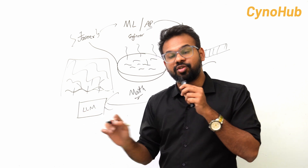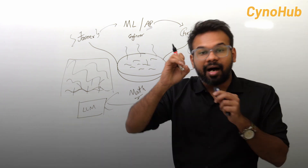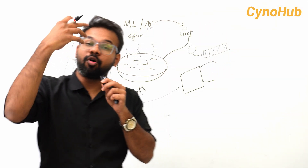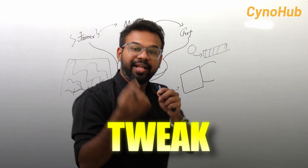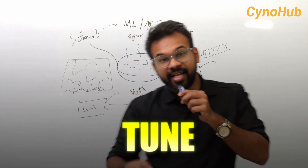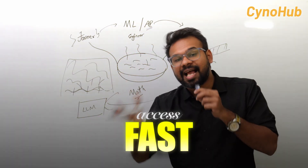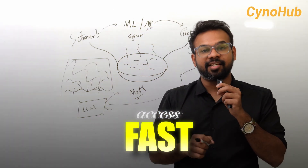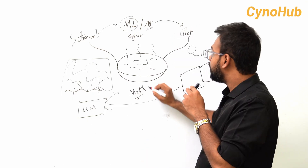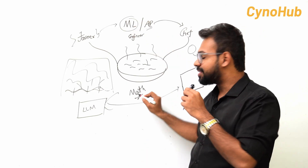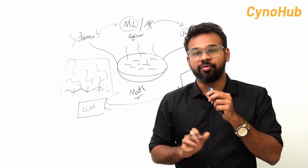When you have a model built, you need to understand accuracy and the probability of the right answer. If you want to tweak the model, you need that mathematical foundation. This is what differentiates a machine learning engineer — there is a lot of mathematics involved in machine learning engineering.